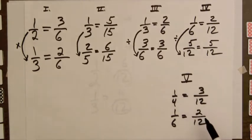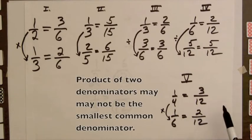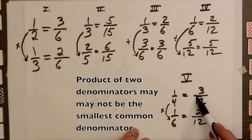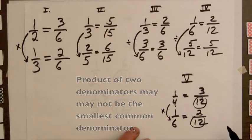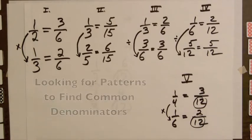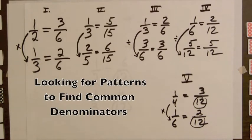In example five we can multiply six times four and get a common denominator of twenty-four, but twenty-four is not the smallest common denominator. In this case both fractions are equal to twelfths, and twelve is the smallest common denominator. Looking for patterns is one suggestion to help students find ways to obtain common denominators.